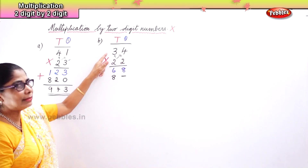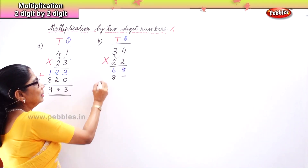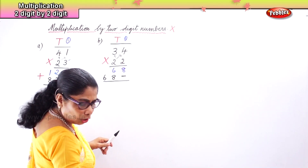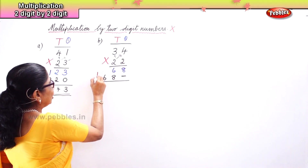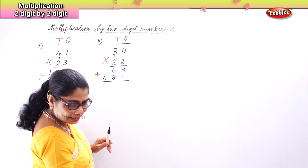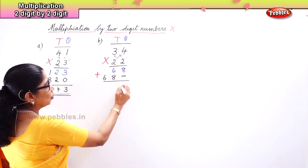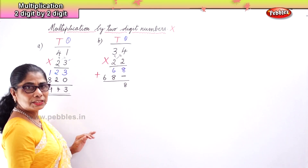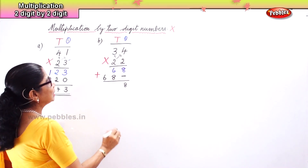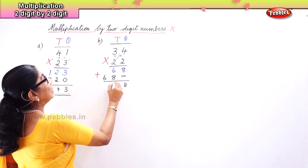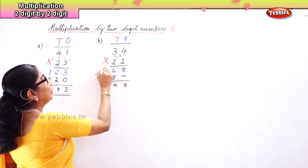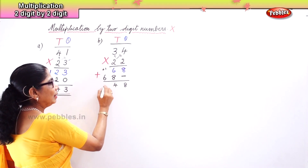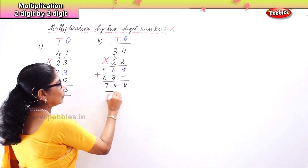Four twos are eight — write 8 below, aligned under the tens. Next, three twos are six — write 6. After completing this, put an addition sign. Now we add: 68 plus 680. You get 8, then six plus eight is fourteen — put 4 carry 1, then six plus one is seven.